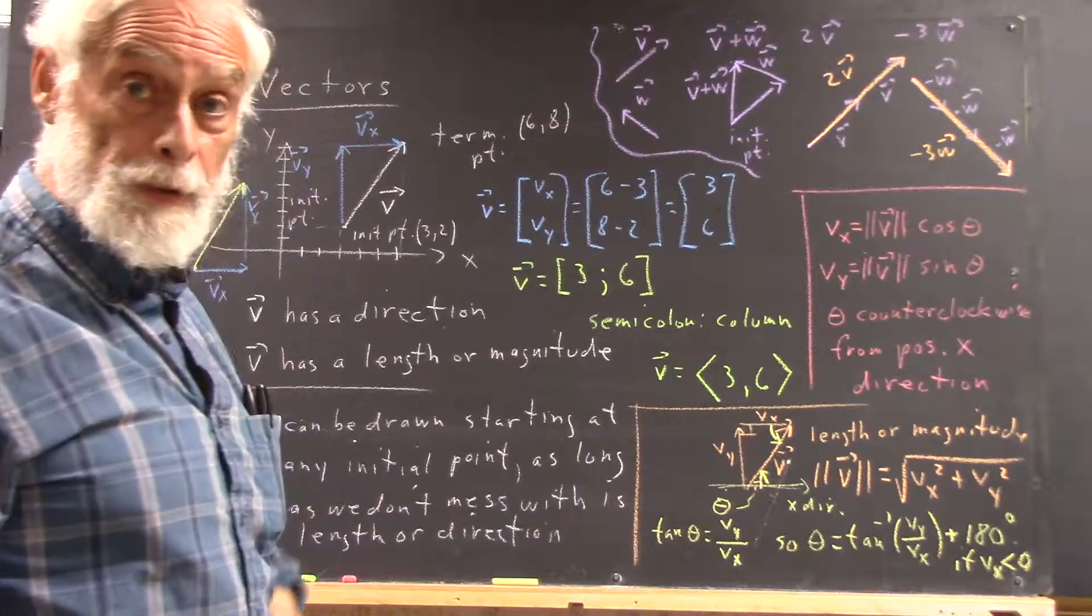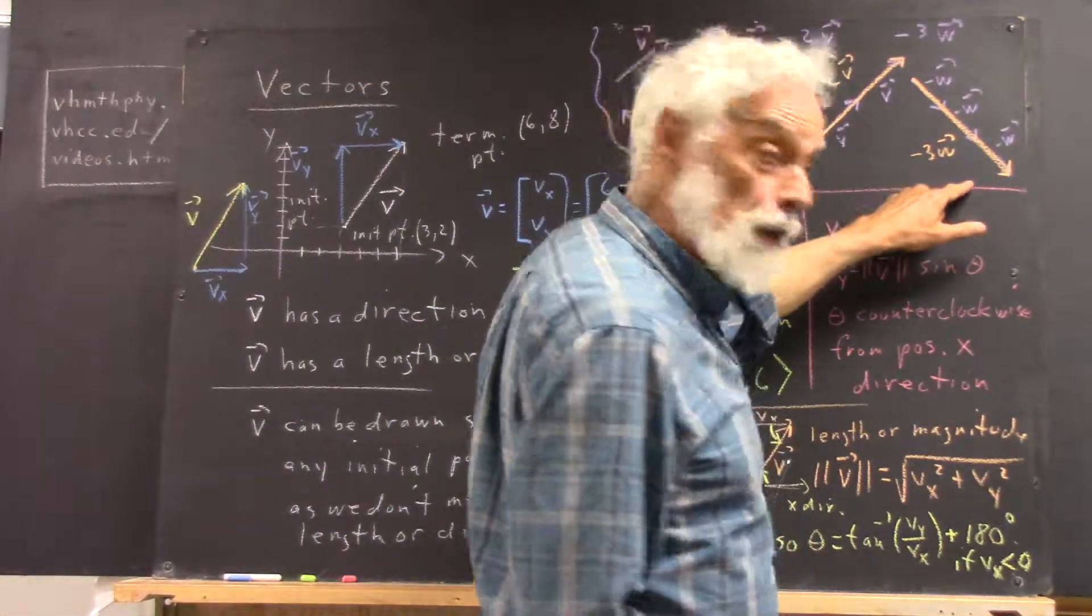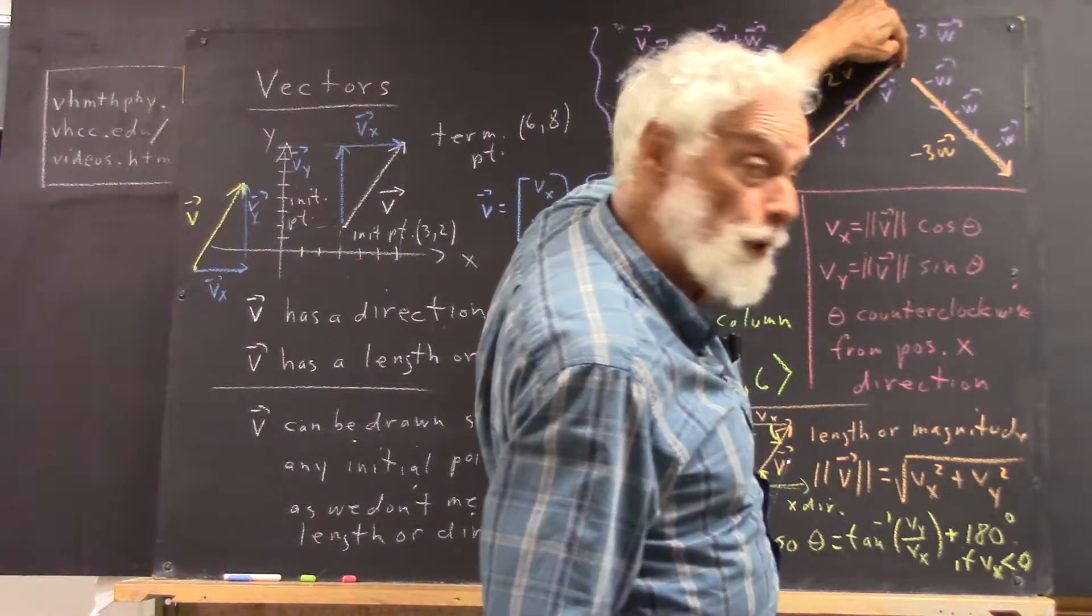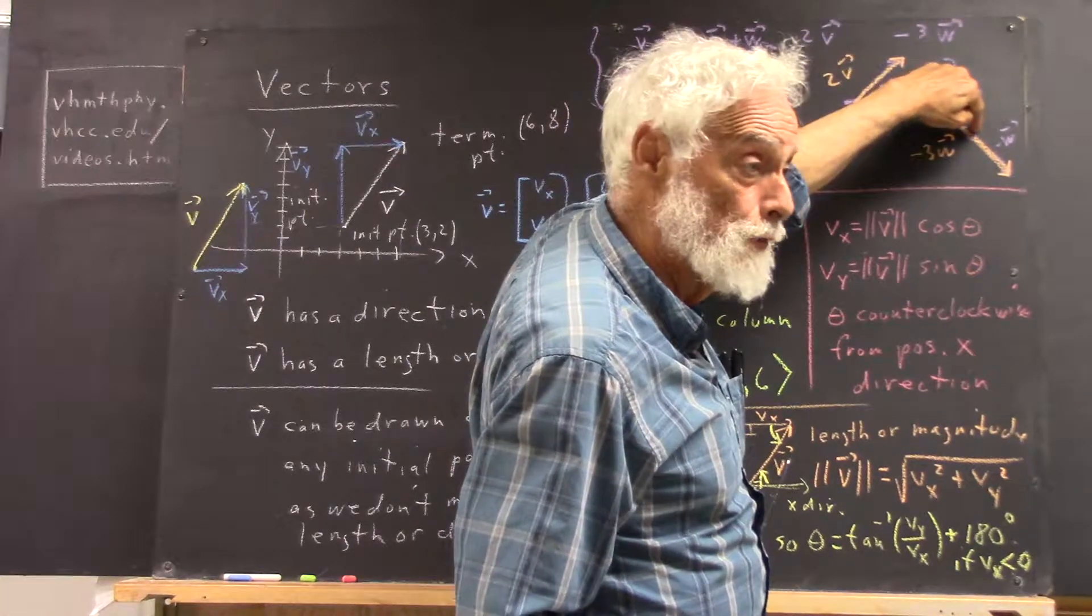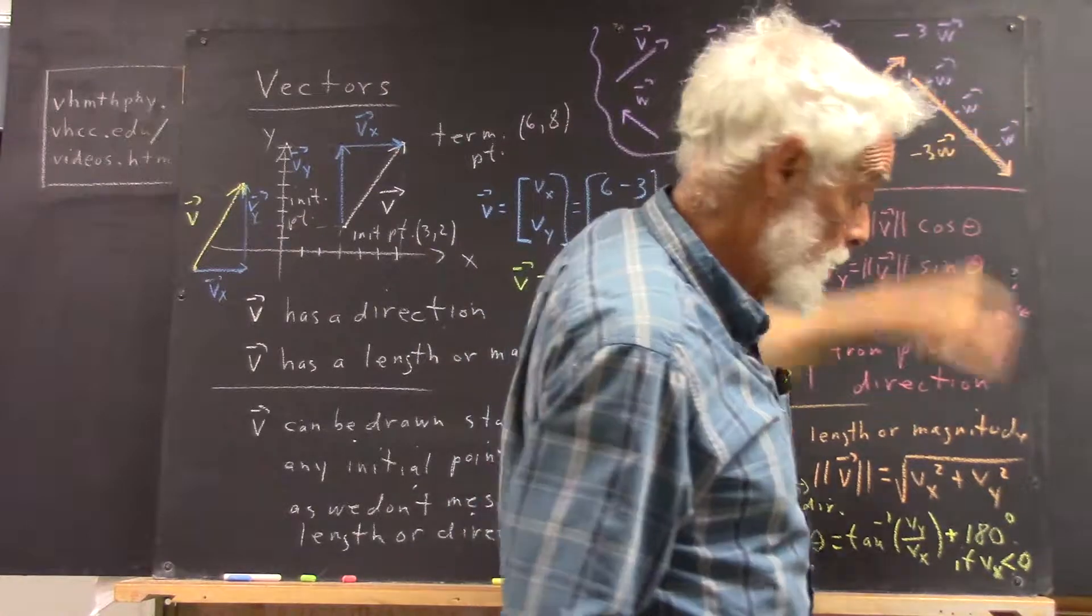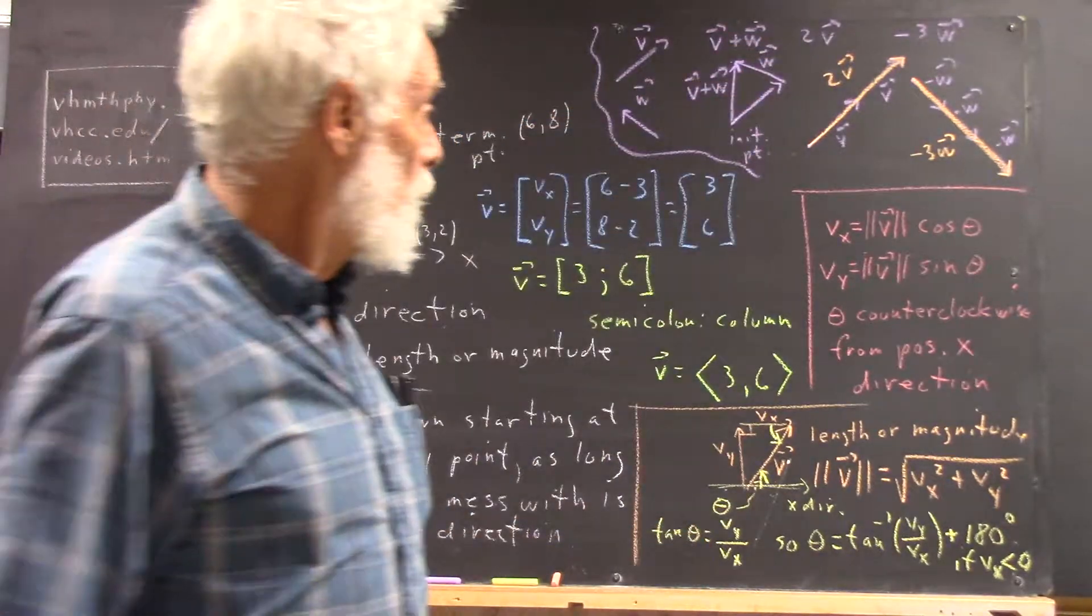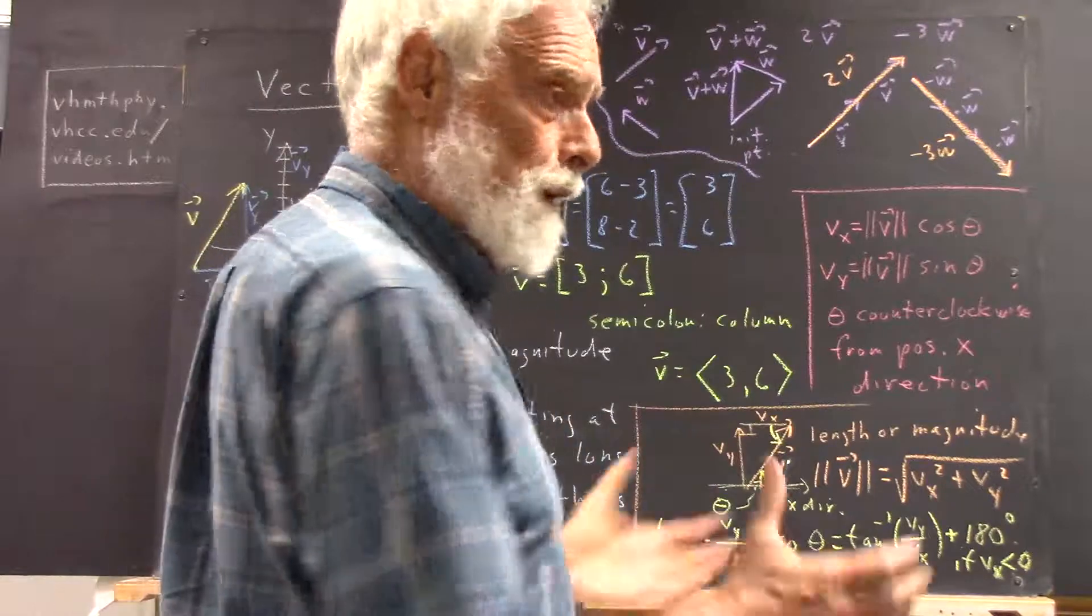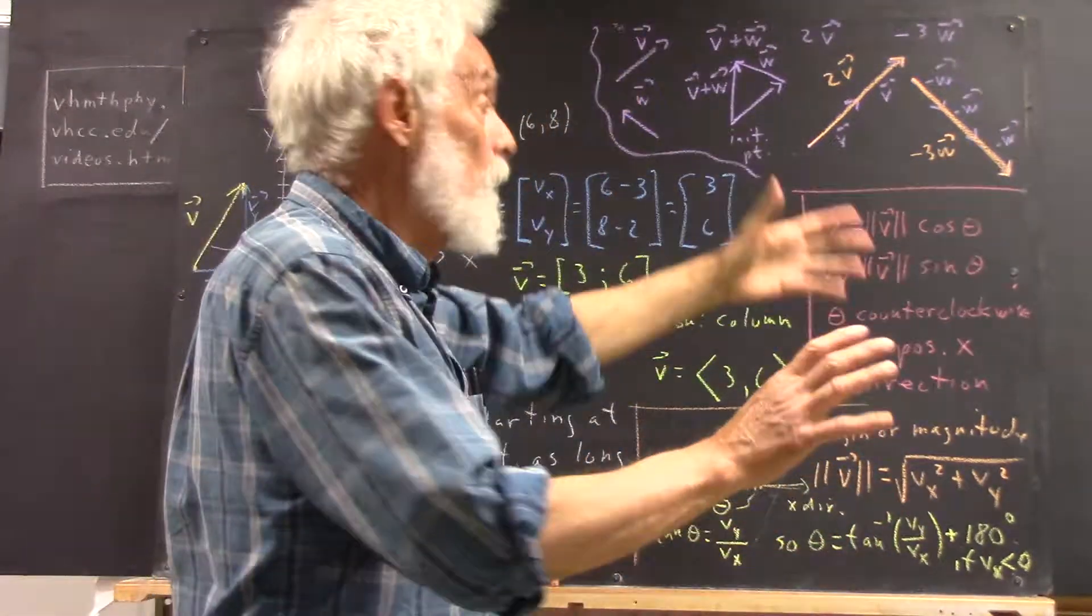And now it's not going to come as any surprise to you that if I wanted to do 2v plus negative 3w, I would just have to move the initial point of my negative 3w here, and wherever that vector ends up is the terminal point if this is the initial point. So I go from here over to here. That's just hand-waving and pointing. You might not totally understand that, but that's what it is, and it's really pretty simple once you draw a few of these things.